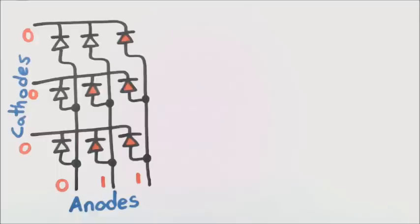Now if I turn off the lights here, we can see this in action. Here I have an LED matrix. I can turn one light on, and I could have two columns and turn both those LEDs on.